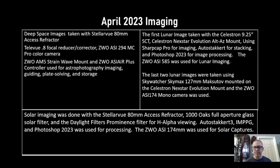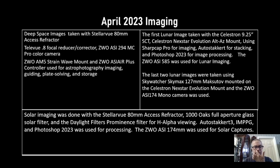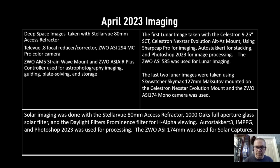Lunar imaging was taken with the Celestron 9.25-inch SCT, or Schmidt-Cassegrain, mounted on the Celestron NexStar Evolution alt-az mount. I used SharpCap Pro for imaging, AutoStacker 3 for stacking, and Photoshop 2023 for image processing. The ZWO ASI 585 was also used for lunar imaging, but the last two lunar images were taken with the Skywatcher Skymax 127 Maksutov mounted on the Celestron NexStar Evolution mount, with the ZWO ASI 174 mono camera.